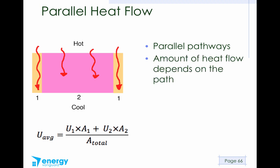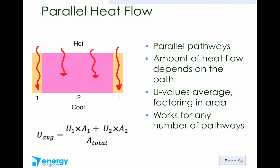The amount of heat that travels through the assembly depends on which path it takes. The way we handle this is that we average the U values using this formula. In this case, we have only two types of pathways, one and two, so we're going to multiply the U value for pathway one times its area, and then add it to the multiplication of U2 and A2. We do all that math on the top, then we divide by the total amount of area, and that will give us the average U value. This works for any number of pathways. I've shown it for only two pathways here, but if we had 50 pathways, it would still work. We would just have to add more terms into our equation.